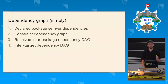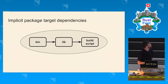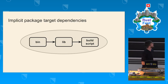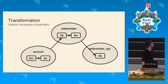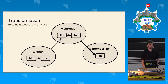Next we transform the dependency DAG between packages into a dependency DAG between package targets — a more fine-grained level. A package can have multiple targets: a binary target, a library target, and a build script target. The build script must be compiled first to prepare the environment, then the library, and finally the binary that uses it. When one package depends on another, it implicitly depends on that package's library target.